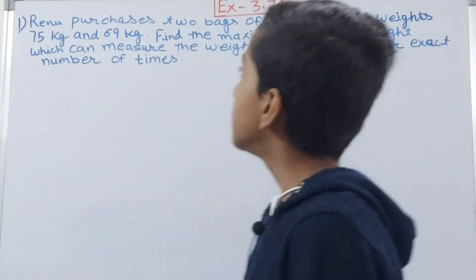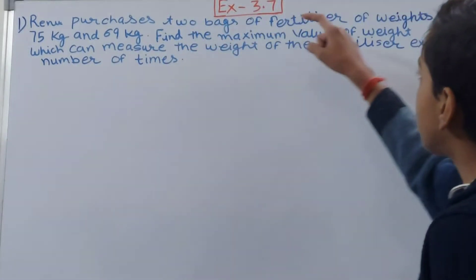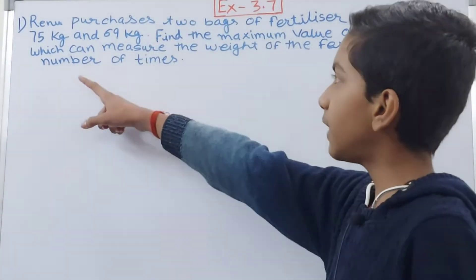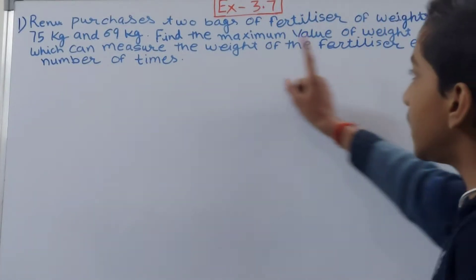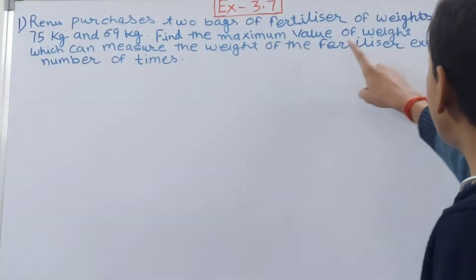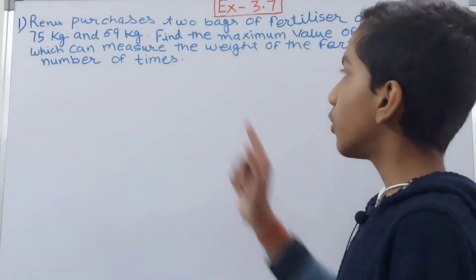This question is: Renu purchases two bags of fertilizer of weight 75 kg and 69 kg. Find the maximum value of weight which can measure the weight of the fertilizer exact number of times.